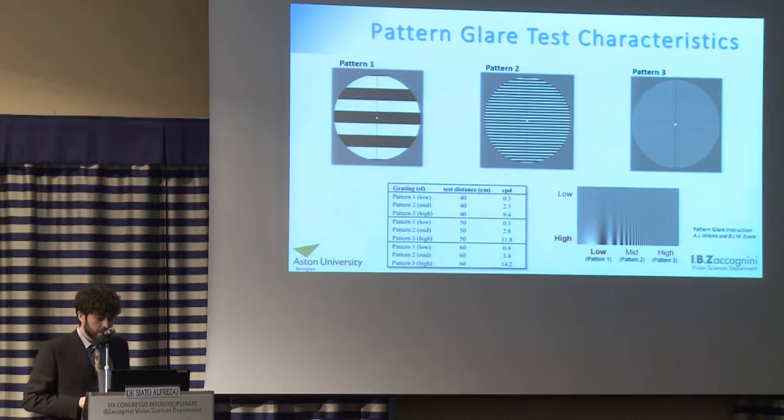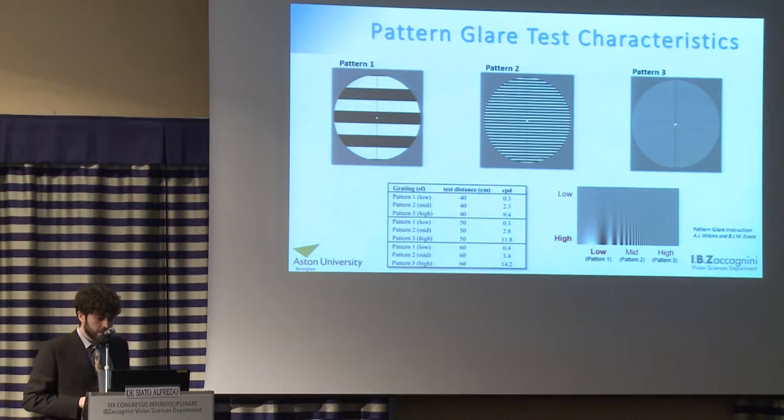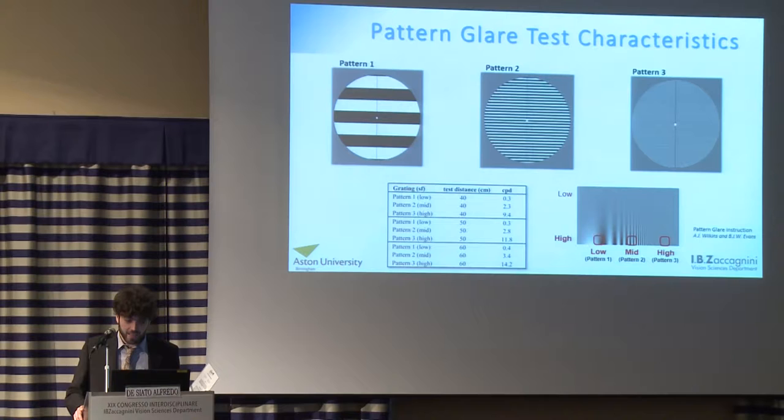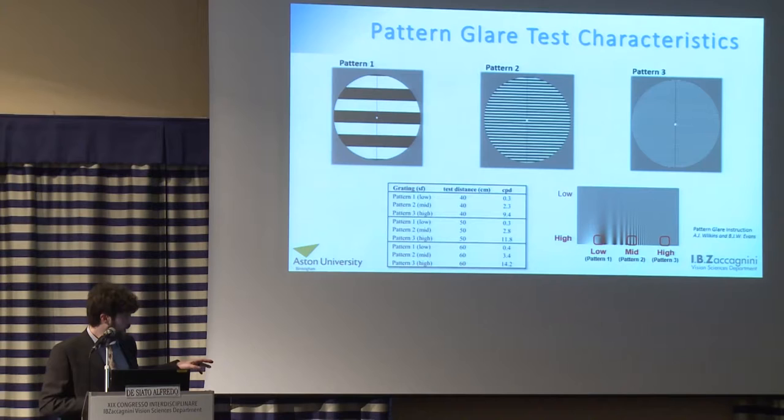These are the pattern glare test stimuli. As you can see, we have three patterns of the same contrast and same size, but different spatial frequencies. On the graph below, we can see that pattern 2 falls almost in the same area as our peak of contrast sensitivity.